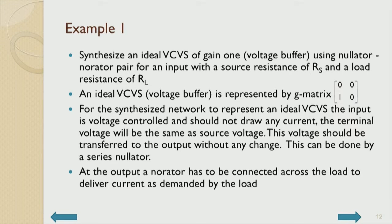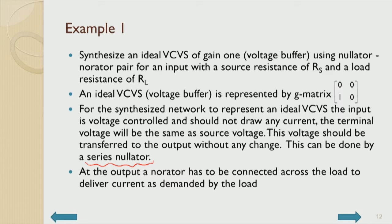Such a voltage buffer can be designed using a nullator-norator pair for an input with source resistance RS and load resistance RL. An ideal VCVS voltage buffer is represented by its G matrix: zero, zero, zero, one — voltage-controlled voltage source with no feedback and gain exactly equal to one. The input is voltage-controlled, meaning it does not draw any current from the source. Since it is voltage-controlled, the nullator should come in series.